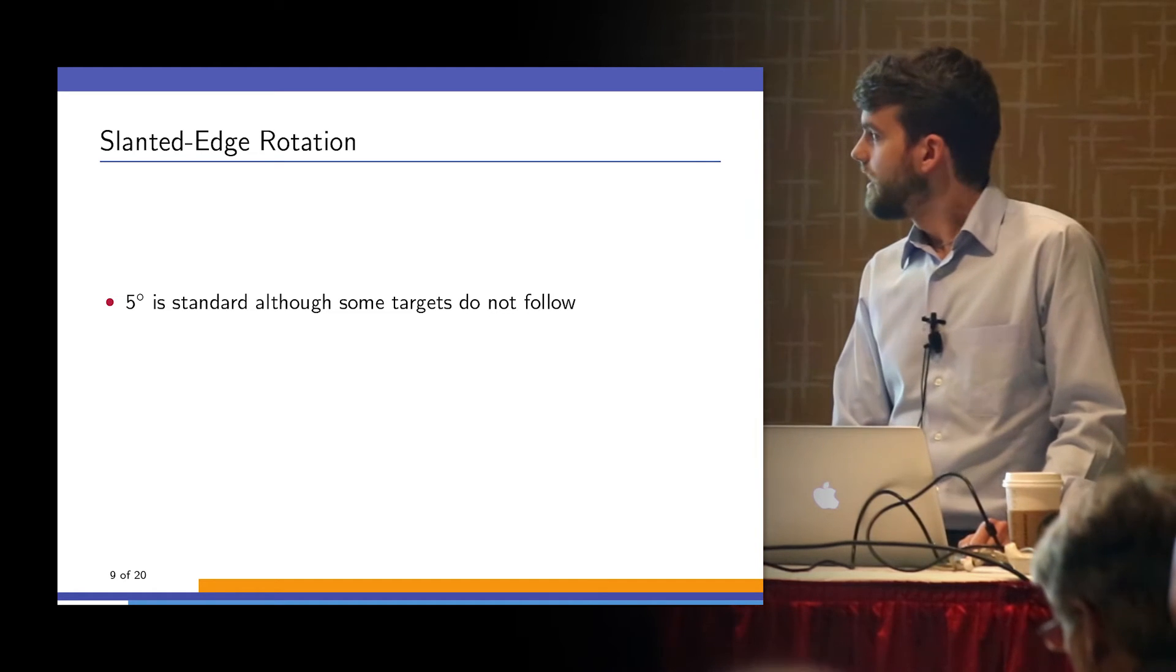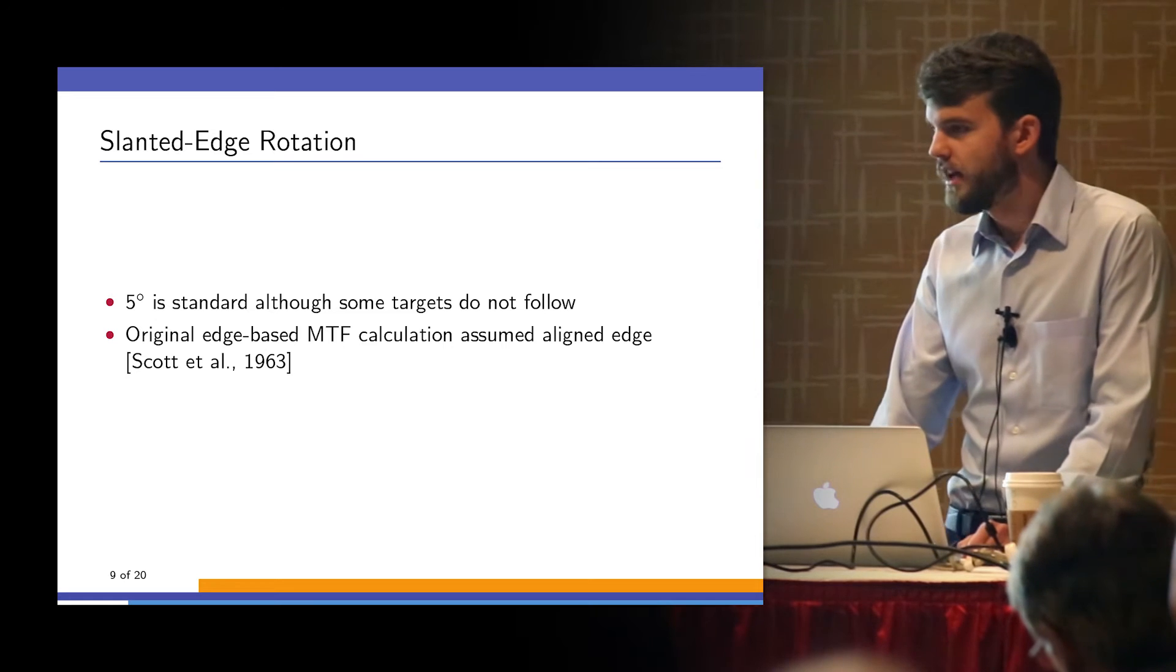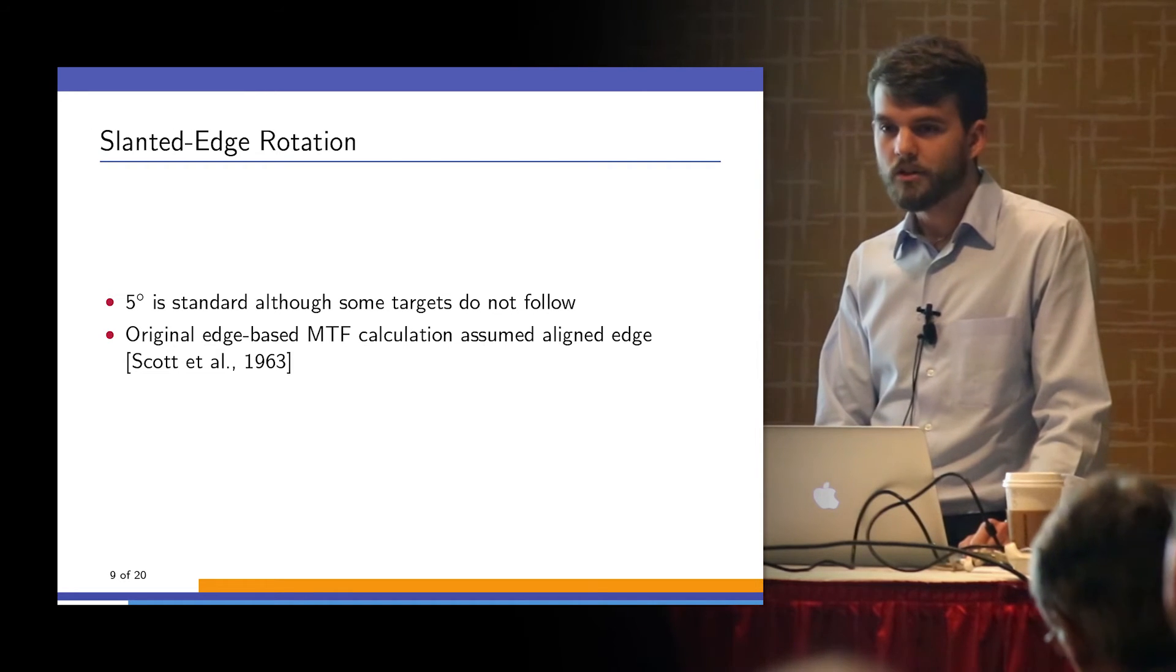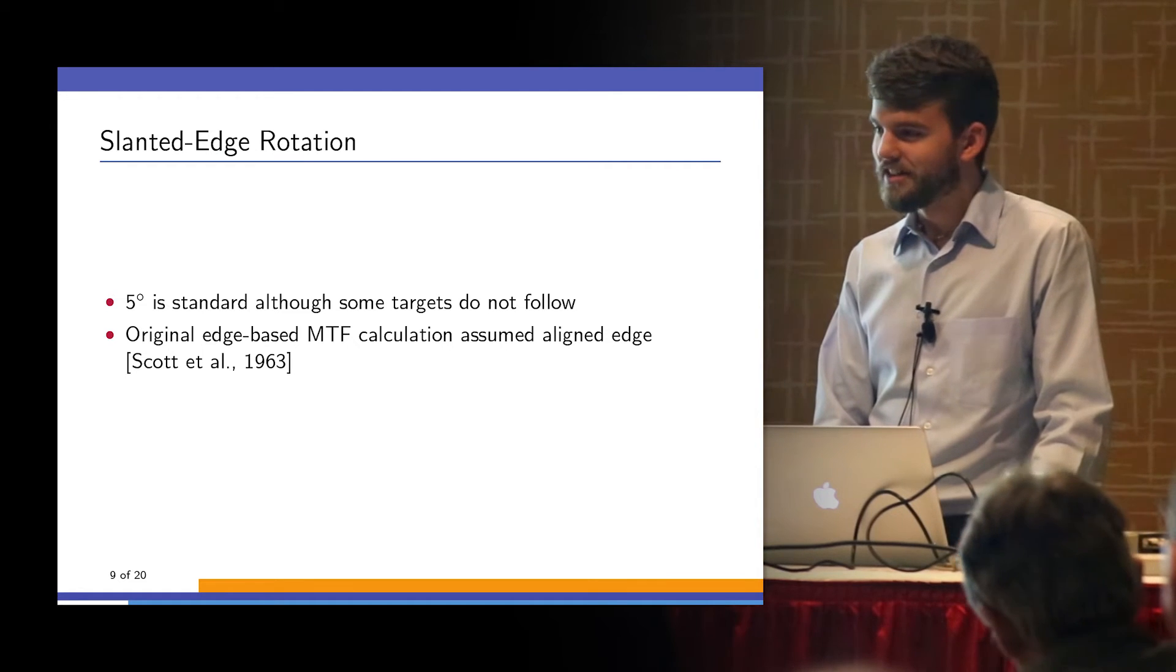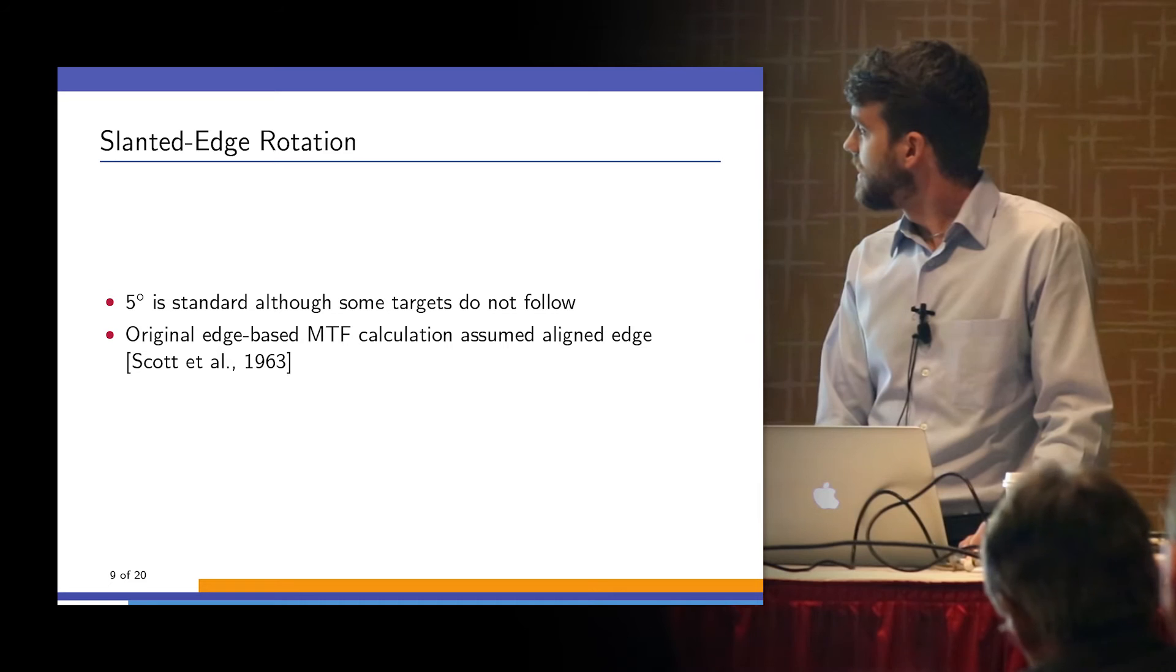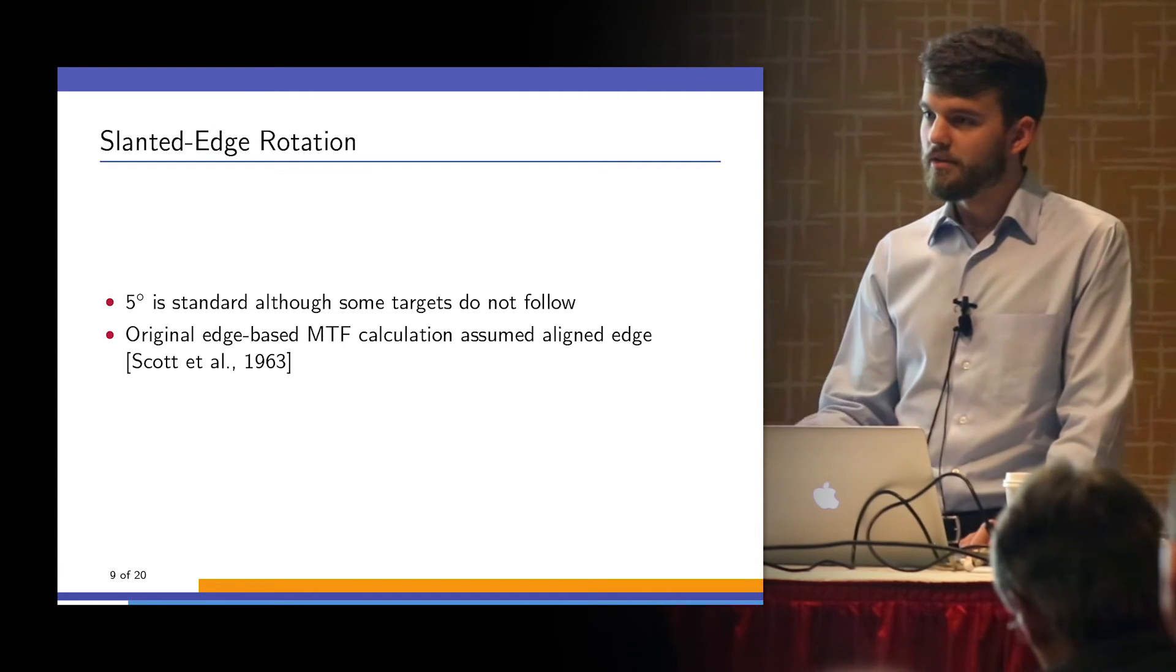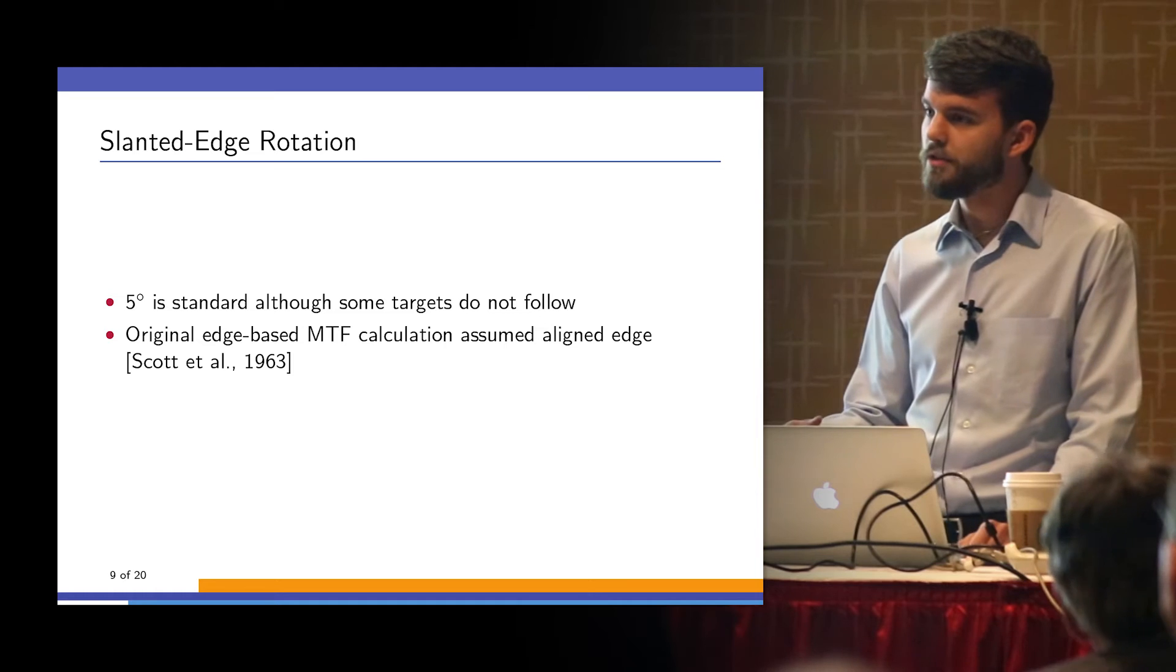There's a problem with that though. The original MTF calculation defined by Frank Scott in 1963, when he used a microdensitometer to sample an edge across film and then calculate MTF from that, he assumed that his edge would be perpendicular to the measurement.